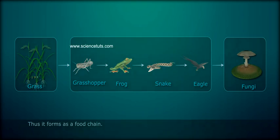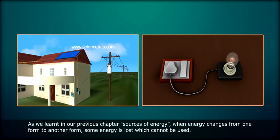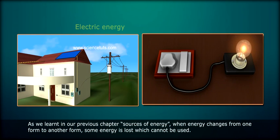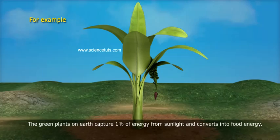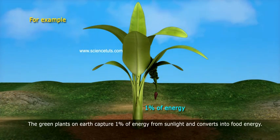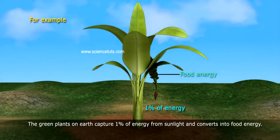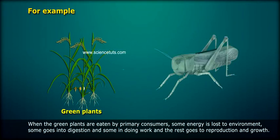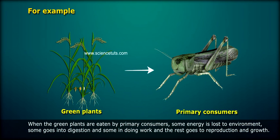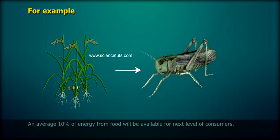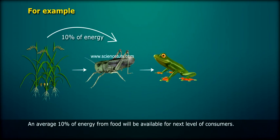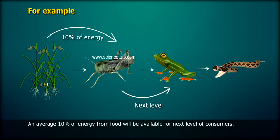Thus, it forms a food chain. When energy changes from one form to another, some energy is lost which cannot be used. For example, green plants on earth capture 1% of energy from sunlight and convert it into food energy. When green plants are eaten by primary consumers, some energy is lost to the environment, some goes into digestion, some into doing work, and the rest goes to reproduction and growth. On average, 10% of energy from food will be available for the next level of consumers.